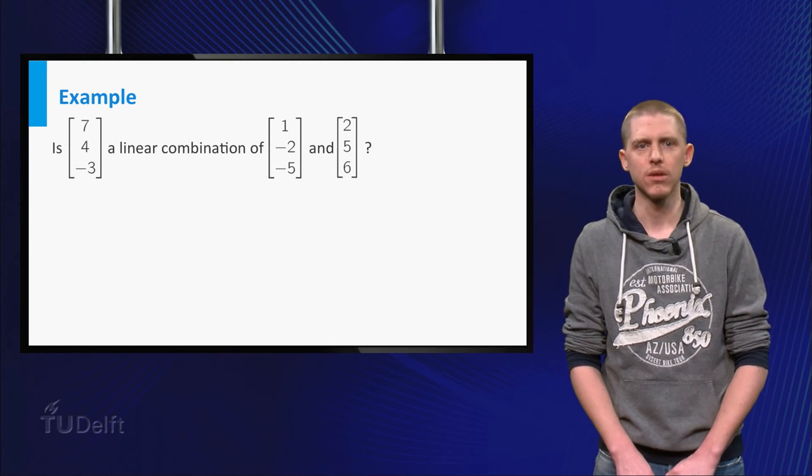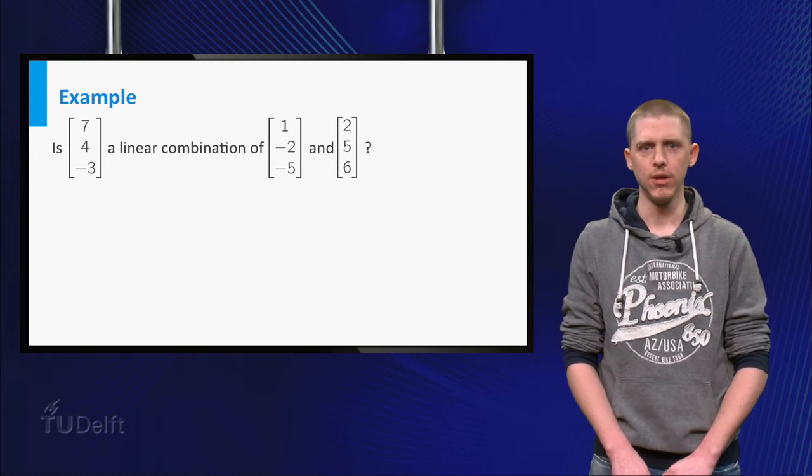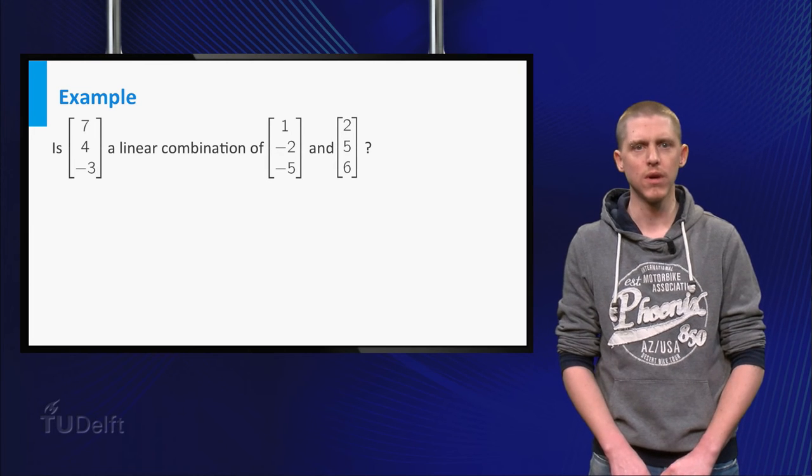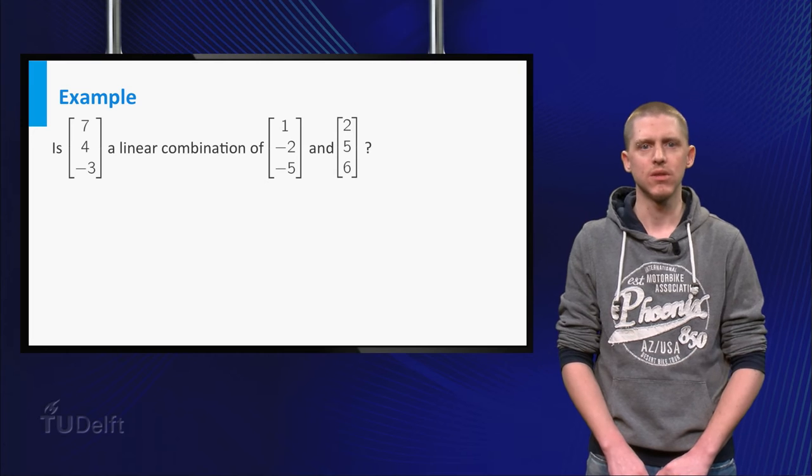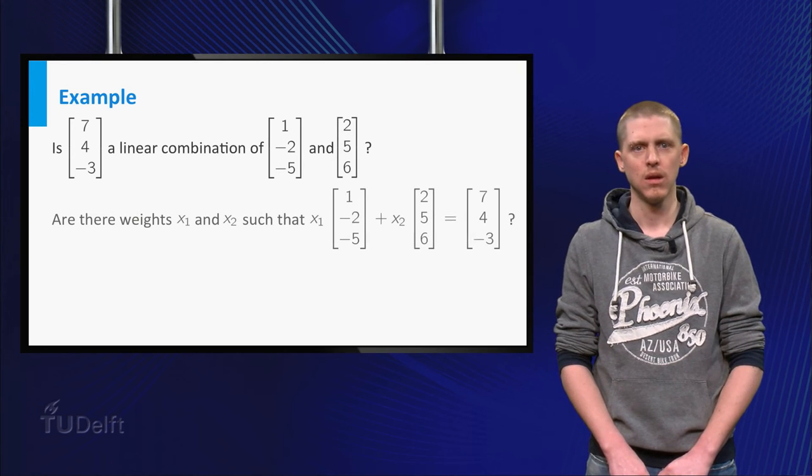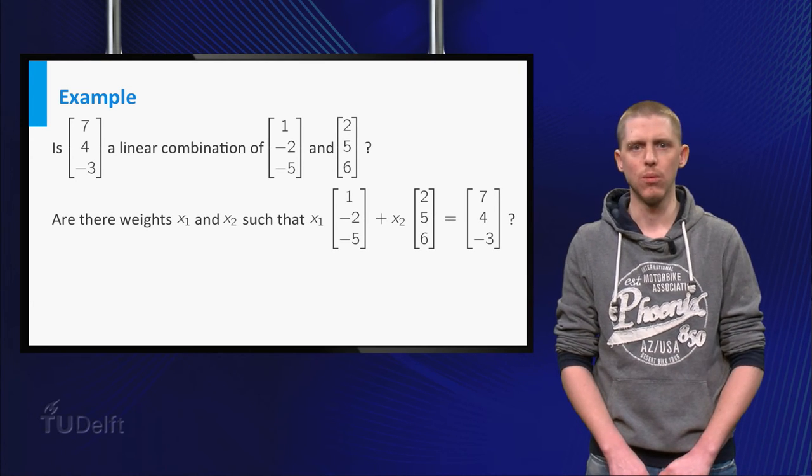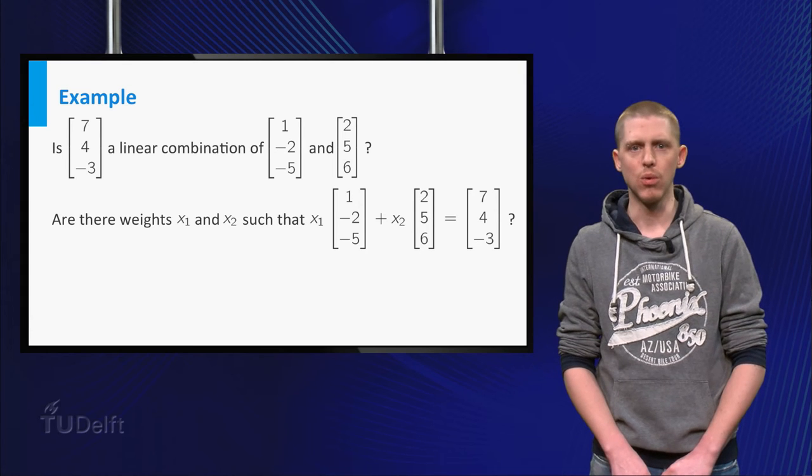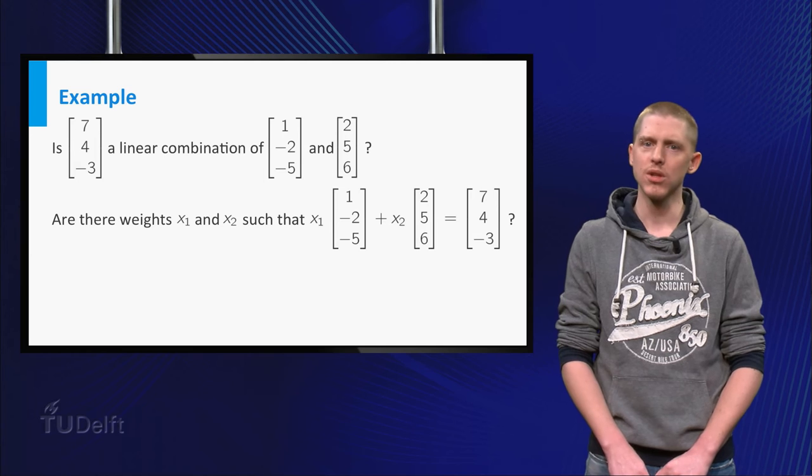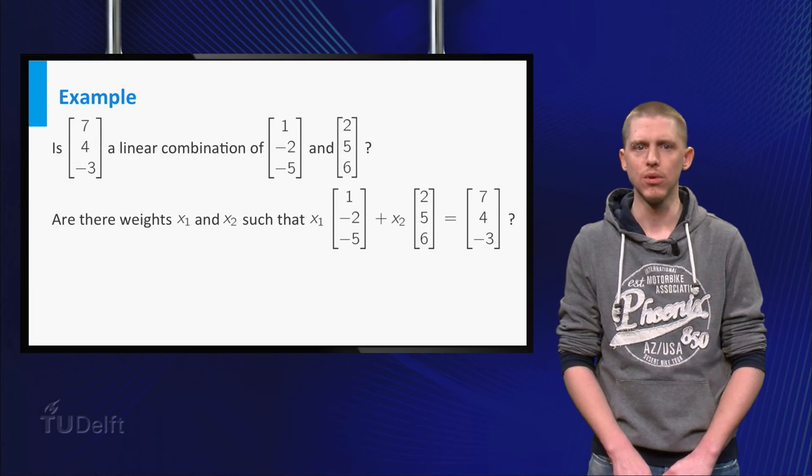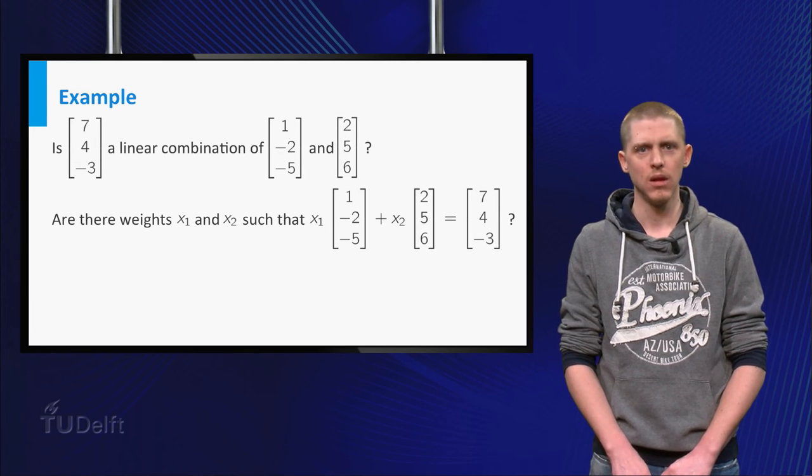Let's say you want to know whether the vector 7, 4, minus 3 is a linear combination of the two vectors 1, minus 2, minus 5 and 2, 5, 6. This is the same as asking the question whether there are weights x1 and x2 such that x1 times the second vector plus x2 times the third vector equals the first vector. Let's solve this.